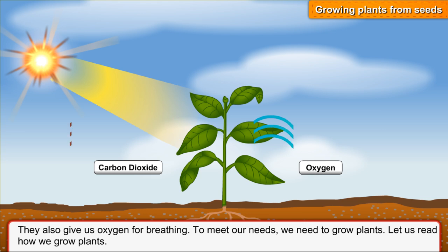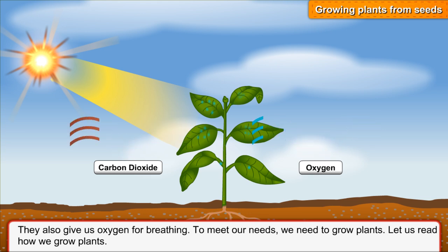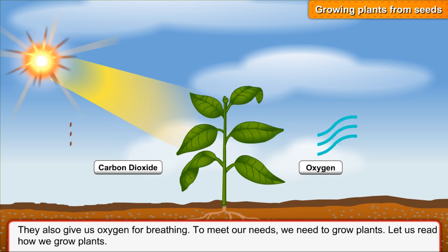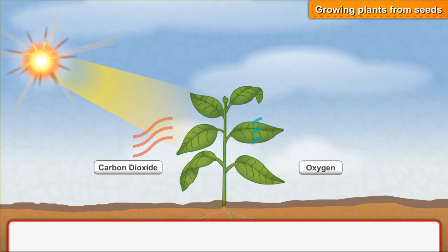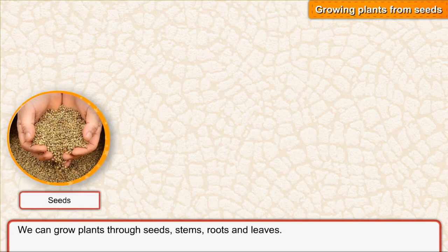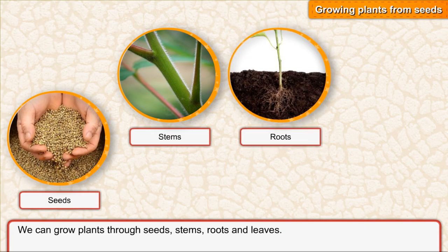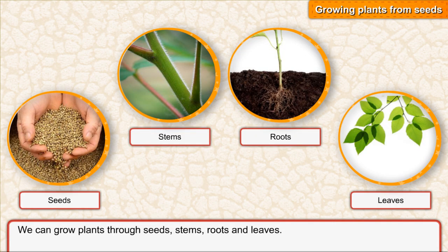To meet our needs, we need to grow plants. Let us read how we grow plants. We can grow plants through seeds, stems, roots and leaves.